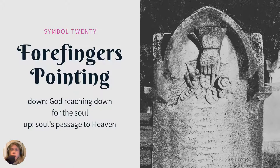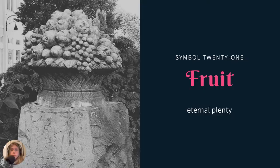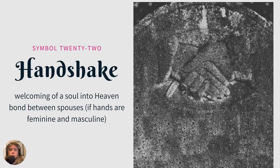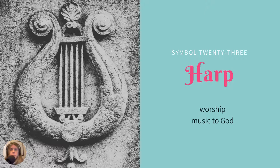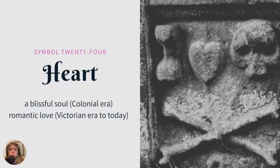Four fingers pointing — this is an interesting one I had not seen before; I actually found two examples. If the fingers are pointing down, that represents God reaching down for the soul. If they're pointing up, that's the soul's passage to heaven. Fruit is fairly universal — it's just abundance and plenty, the whole cornucopia idea. A handshake could mean the welcoming of a soul into heaven, or if one hand looks more masculine and one more feminine, that could represent a special bond between spouses. A harp could be another symbol for Irish ancestry, represent worship, or someone who loved to sing praise music.